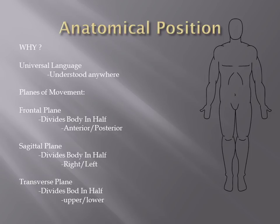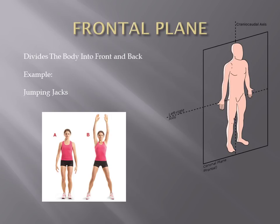You've got your sagittal plane, which cuts you into left and right hemispheres. Imagine there's a pane of glass cutting this guy in half in these different ways — anything that moves along that glass is the plane of movement. The frontal plane has his arms moving out to the side like a jumping jack. If his leg or arm goes forward or backward, he's no longer in the frontal plane.